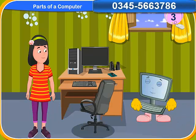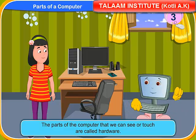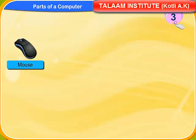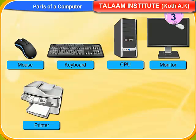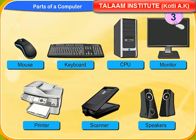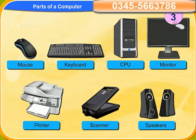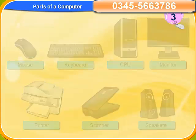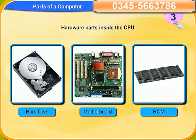What is hardware? The parts of the computer that we can see or touch are called hardware. You mean the mouse, the keyboard, the CPU, the monitor, the printer, scanner and speakers are all hardware? Definitely Rennie, these parts are connected to each other by wires so that they can work together. What about the parts inside the CPU? Are they called software? No Rennie, these parts like the hard disk, the motherboard and the ROM are also hardware.